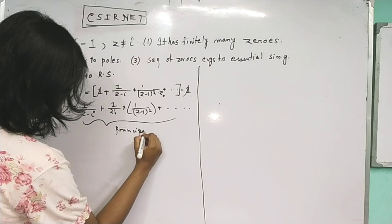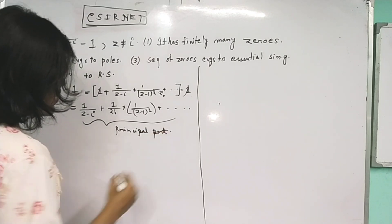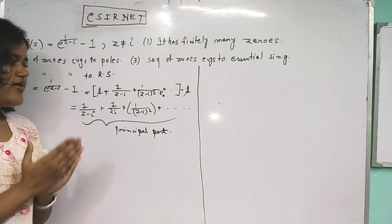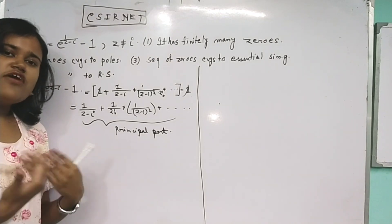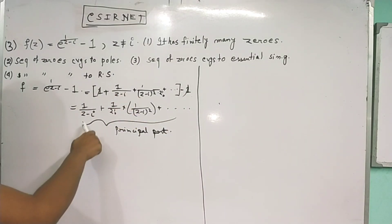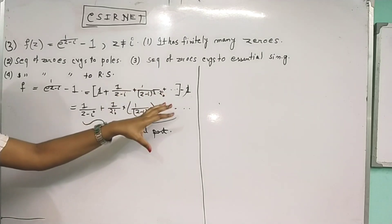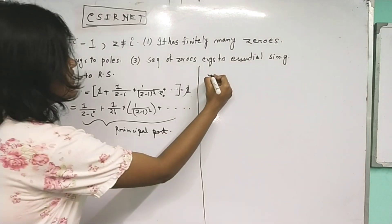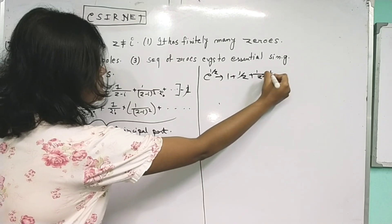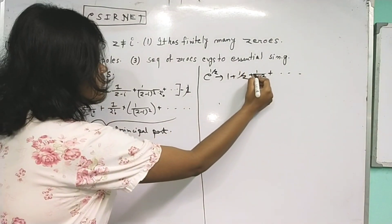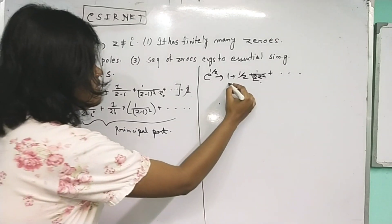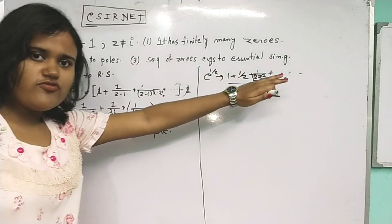This is called the principal part, and this principal part has infinitely many terms. We know that if in the Laurent expansion of a function the principal part has infinitely many terms, then at that point there is an essential singularity. For example, e^(1/z) expanded as 1 + 1/z + 1/z² + ... at z = 0 has an essential singularity, where that part is the principal part.